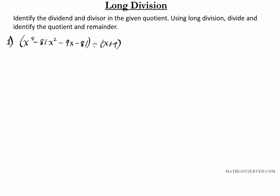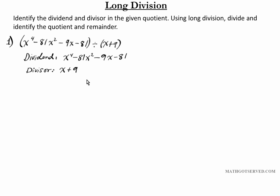The first task is to identify the dividend and divisor. The dividend in this expression is the term that comes first, which is x to the fourth minus 81x squared minus 9x minus 81 — think of it as the numerator in a quotient expression. The divisor is what the dividend is being divided by, basically the second expression, which is x plus 9. If this quotient were written as a fraction, the divisor would be the denominator and the dividend the numerator.